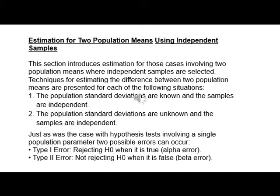Estimation for two-population means using independent samples. This section introduces estimation for those cases involving two-population means where independent samples are selected.